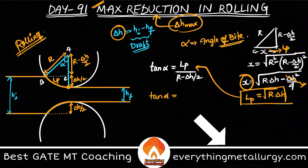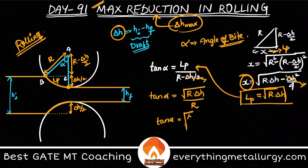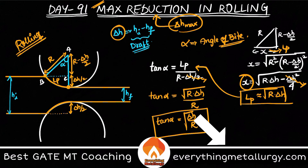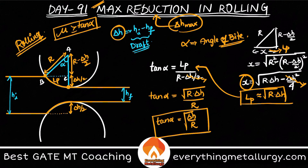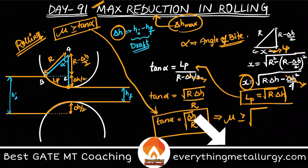Substituting LP, tan alpha equals the square root of r times delta h divided by r. Delta h by 2 in the denominator can be neglected, giving tan alpha equal to the square root of delta h by r. Now, for rolling to occur, mu must be greater than or equal to tan alpha. So mu is greater than or equal to the square root of delta h by r.